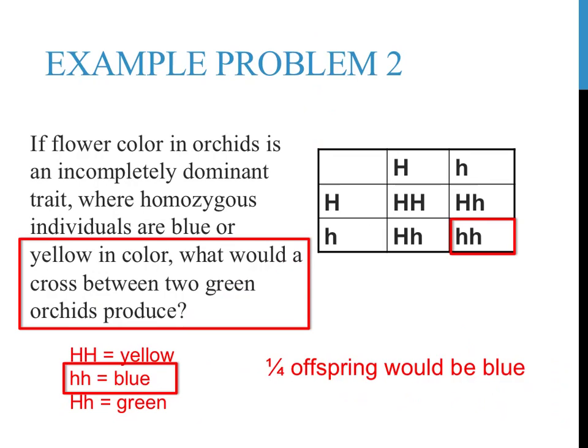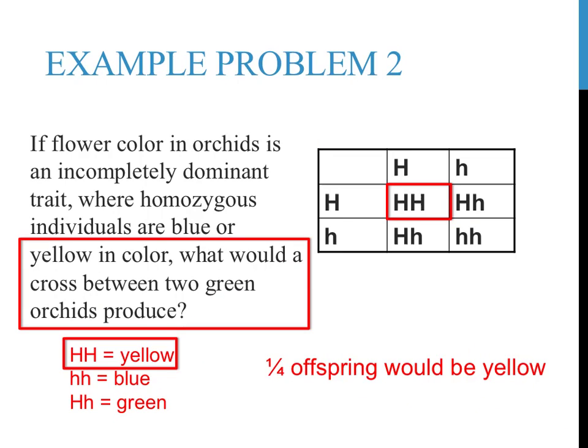The genotype lowercase h lowercase h would be a blue-flowered orchid. As a result, one-quarter, or 25%, of the resulting flowers from a cross between two green orchids would be expected to be blue in color. You also find the genotype capital H capital H once in this Punnett square, in the top left-hand corner. The genotype capital H capital H would be a yellow-flowered orchid. Again, one-quarter of the offspring would be expected to be yellow-colored.